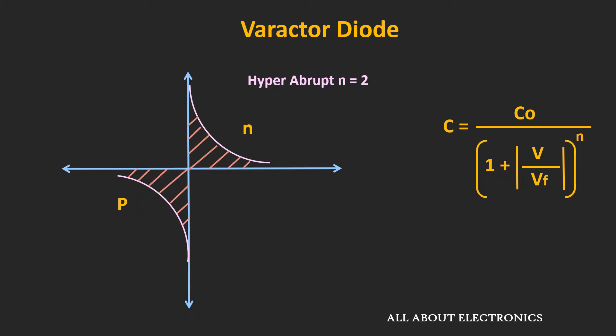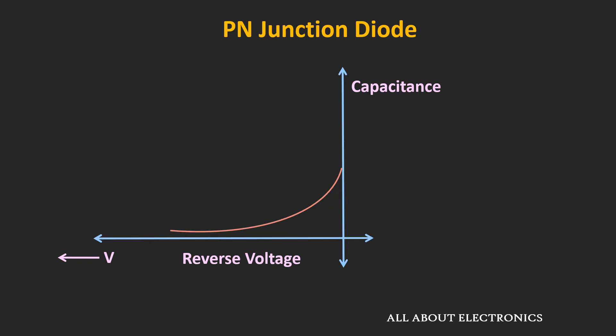The second type is the hyper-abrupt varactor diode. In its doping profile, the doping concentration reduces with distance on both sides. For this doping profile, the value of N is equal to 2. From the capacitance expression, we can say that for this hyper-abrupt junction, as the reverse bias voltage increases, there will be a greater change in capacitance. In general, any diode can be used as a variable capacitor, but varactor diodes are optimized and manufactured to provide a greater change in capacitance with reverse bias voltage.